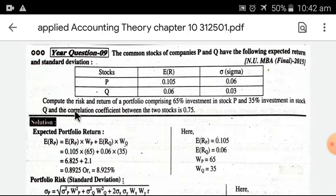Compute the risk and return of a portfolio comprising 65% investment in stock P and 35% investment in stock Q, and the correlation coefficient between the two stocks is 0.75.